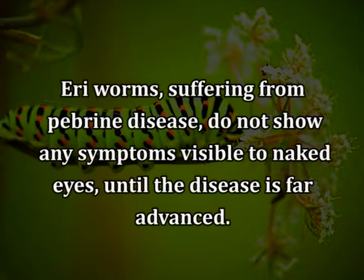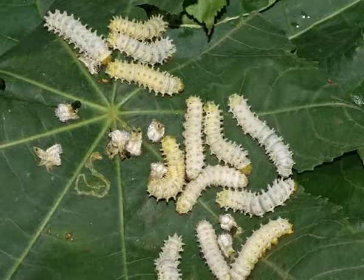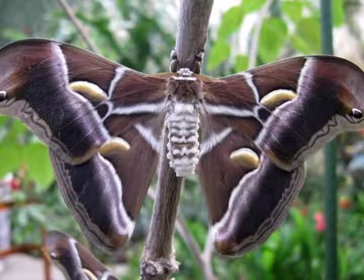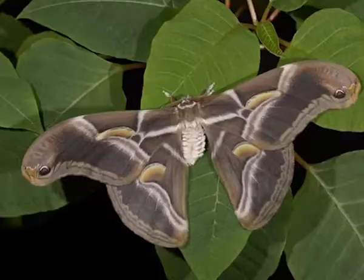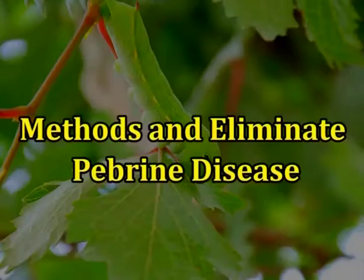Symptoms of pebrine disease: Eri worms suffering from pebrine disease do not show any symptoms visible to the naked eye until the disease is far advanced. The diseased larvae become more and more unequal in size, get sluggish, and spin poor, flimsy cocoons. The moth emerges with difficulty and looks deformed with small and scorched-looking wings. They often become dull and black, and lay eggs irregularly, many of which do not hatch at all.